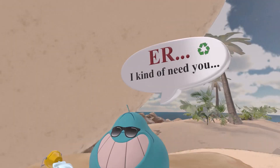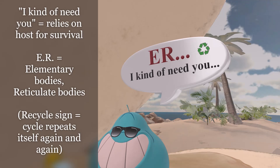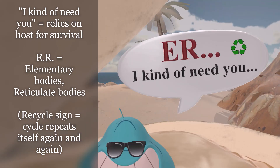He's saying 'I kind of need you,' which reminds us that Chlamydia relies on a host for survival because it doesn't produce its own ATP. Now let's get to the letters 'er.' 'Er' reminds us of the two forms of Chlamydia: E for elementary bodies, and R for reticulate bodies.